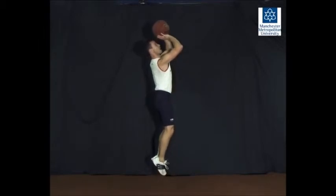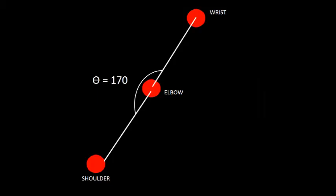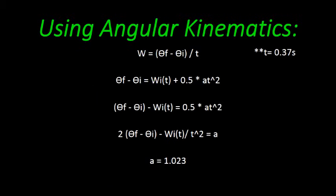As we continue the video, we see the person extends their arm to a full extension, resulting in a theta, or an arm angle, of 170 degrees, much larger than that of the original 63 degrees. Because we are able to find the initial joint angle and the final joint angle, we can now use the kinematics equation shown to find the angular acceleration.